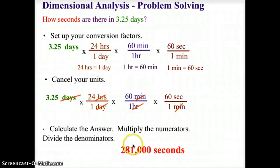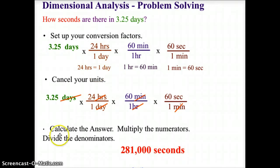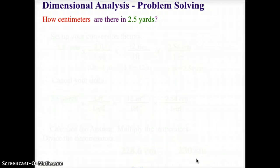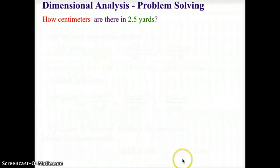We've rounded to three significant digits, which coincides with the three digits in our original question, following significant digit rules. Here we have another dimensional analysis problem. Why don't you take out a piece of paper, pause the video, try to solve this on your own, and then come back and I'll walk you through the explanation. Go ahead and turn off the video now.